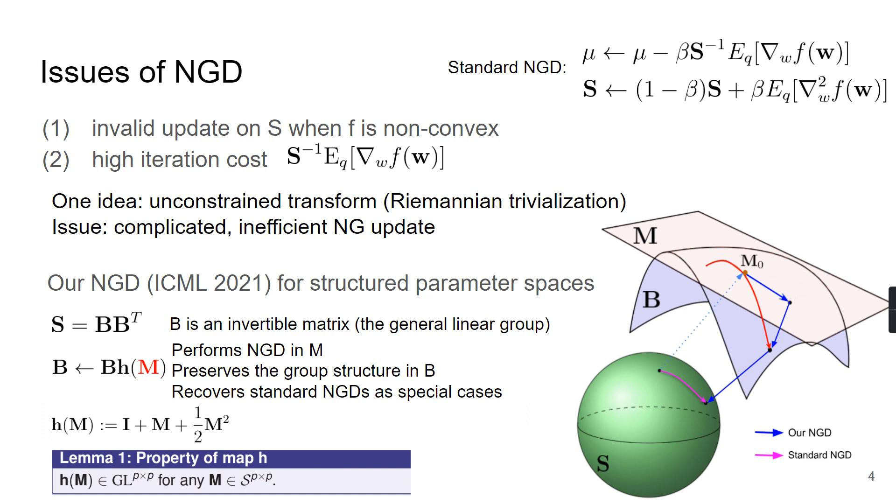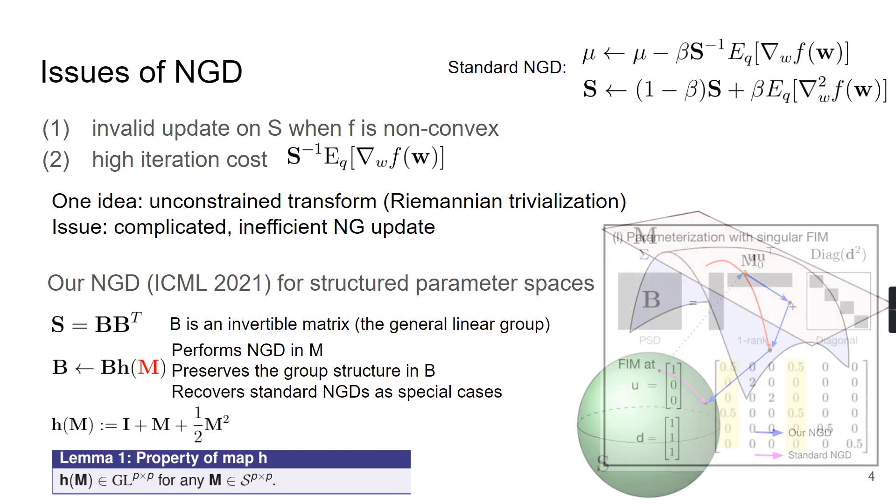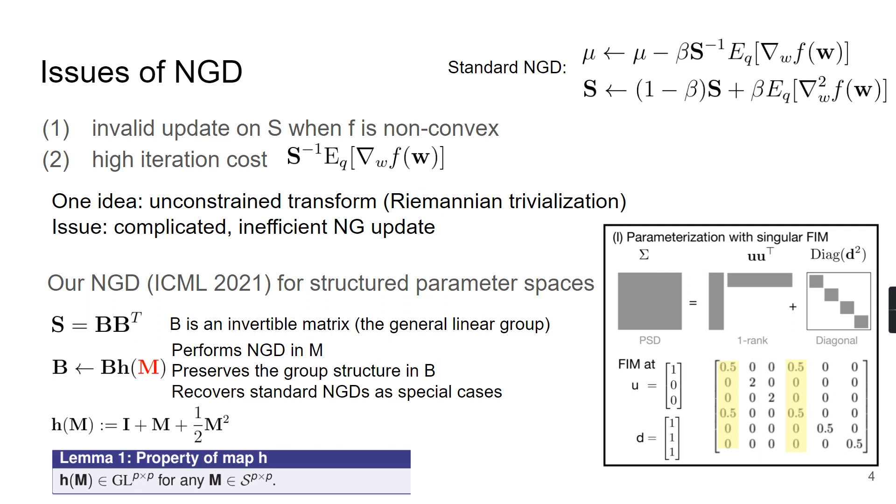In general, it is hard to directly enforce structures in the standard natural gradient steps due to the complicated natural gradient computation. Moreover, an arbitrary structure could lead to a singular Fisher information matrix. For example, a commonly used low rank plus diagonal structure could lead to a singular Fisher information matrix. An ad hoc approximation to handle this singularity could destroy nice properties of natural gradient descent, such as the invariant property that we are about to discuss.